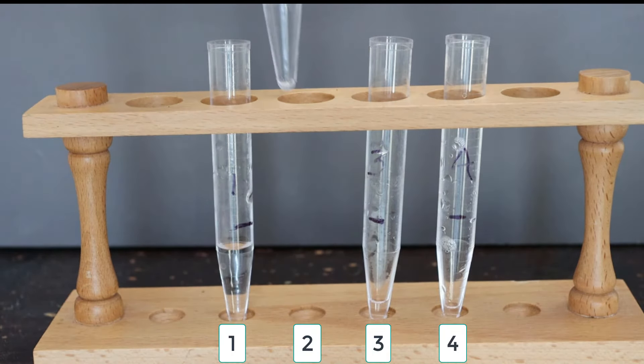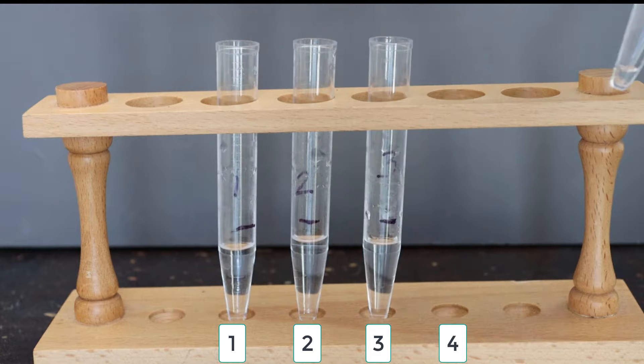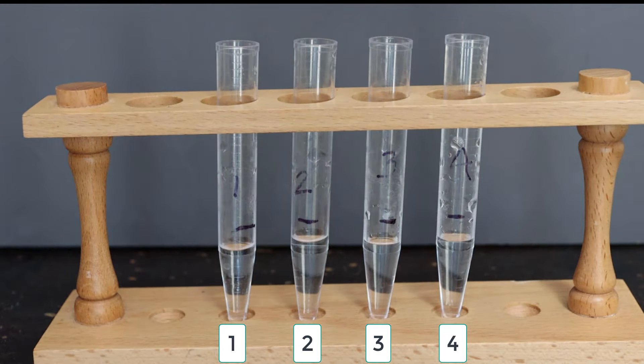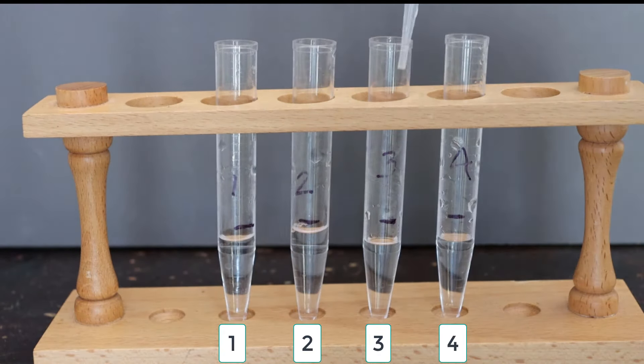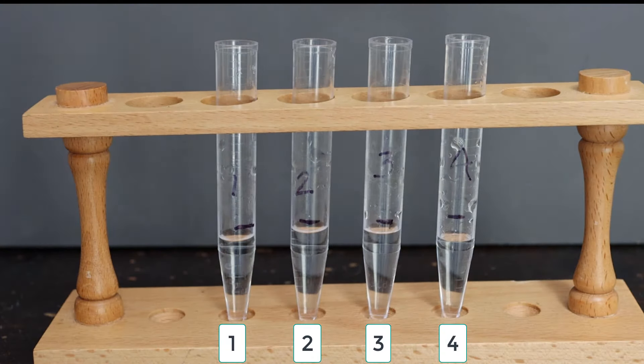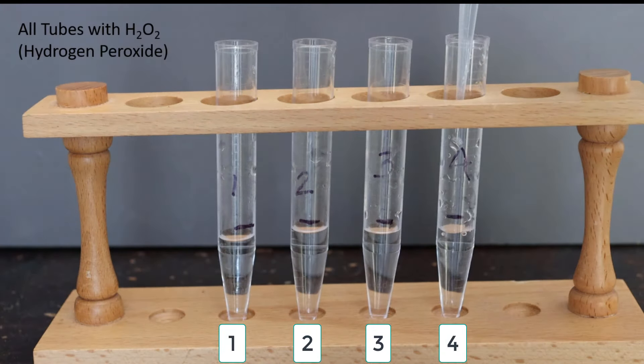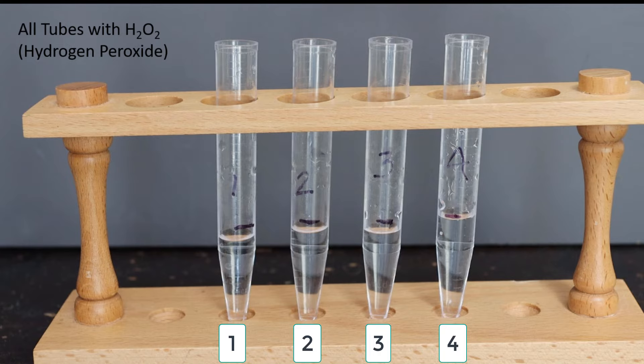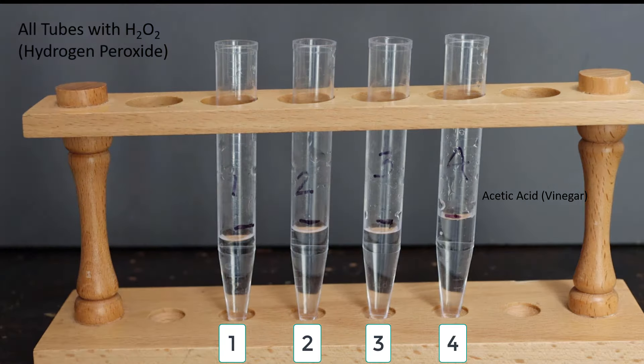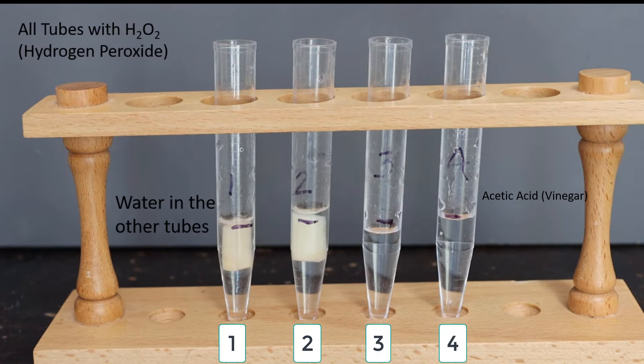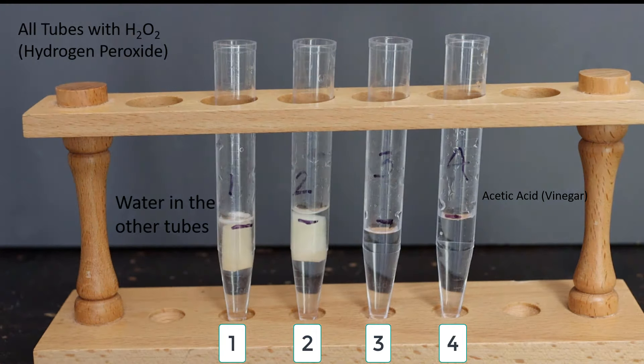Then we set up our test tubes. We have four test tubes—one, two, three, and four—that will correspond to our potatoes. The liquid inside the test tubes is hydrogen peroxide. And then in test tube four we also put one milliliter of acetic acid or vinegar, and we put one milliliter of water in test tubes one, two, and three.